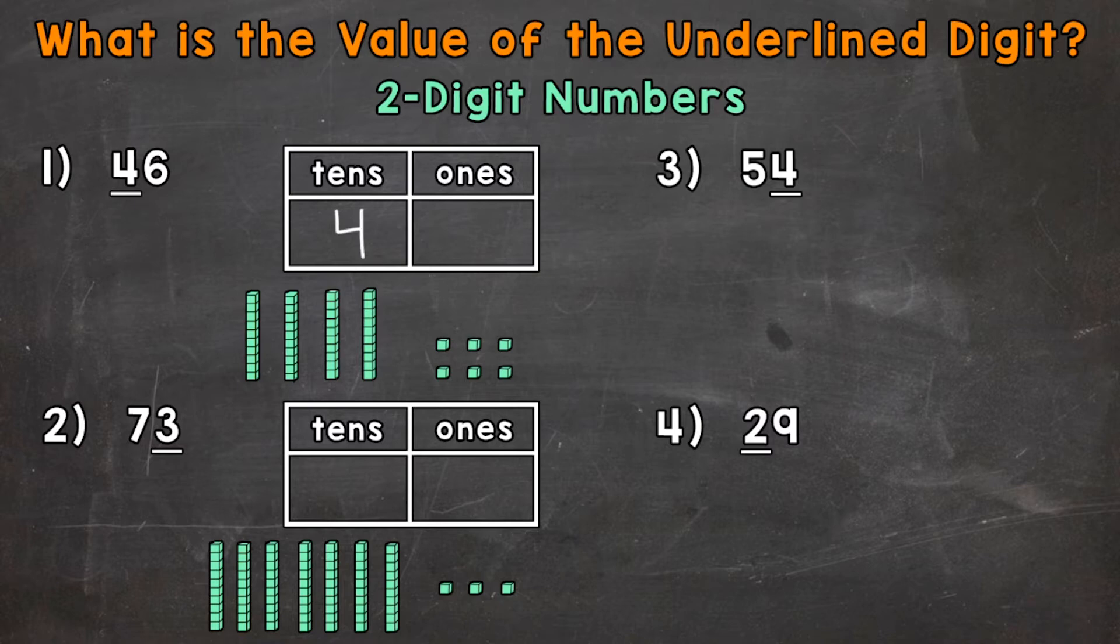46. Let's take a look at the value of that 4. So the 4 is in the tens place. So that 4 represents 4 groups of 10: 1, 2, 3, 4.